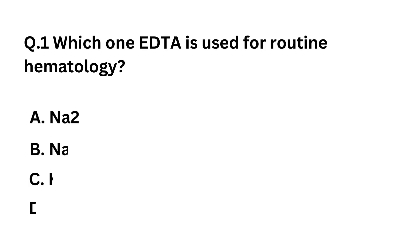Question 1: Which form of EDTA is used for routine hematology? Option A: Disodium. Option B: Trisodium. Option C: Dipotassium. Option D: Tripotassium.